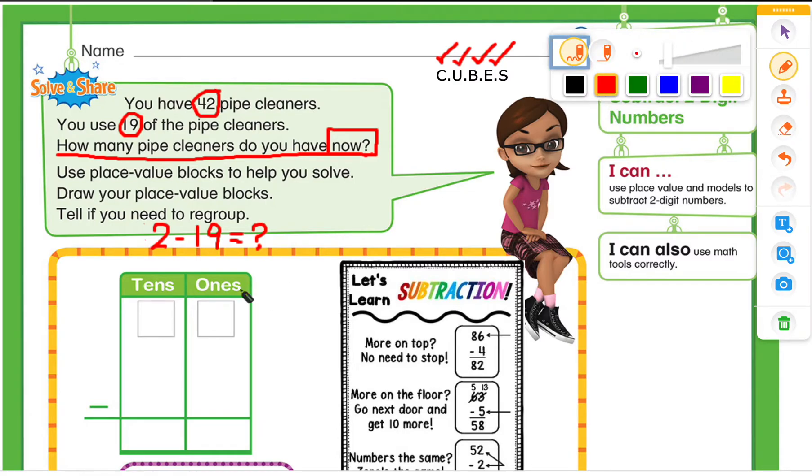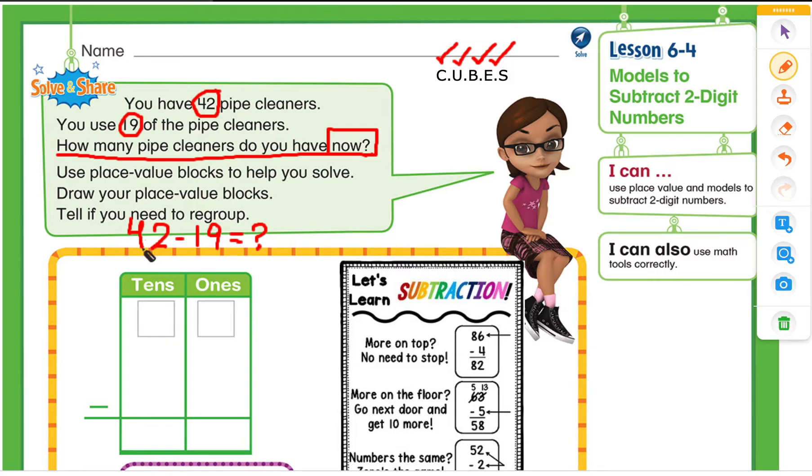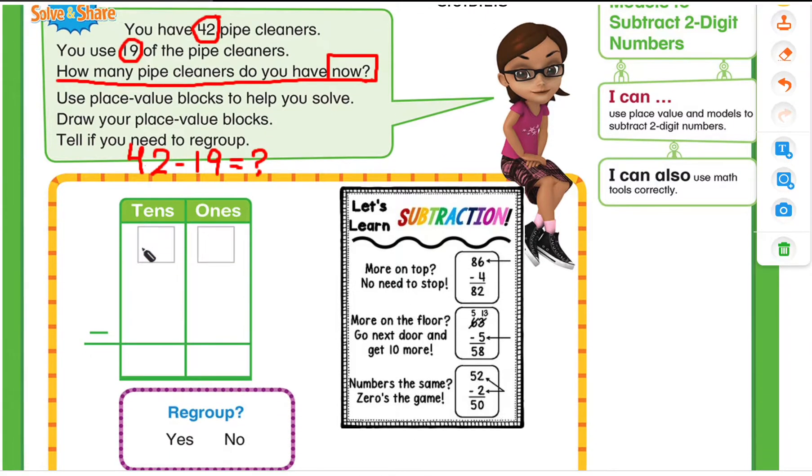And here we are going to write 42. So first, we are going to line up our numbers. So I'm going to put 42 like this. And I'm going to put 19 on the bottom. Just pay attention how I align the 1's place value numbers on one column and the 10's place value on the other column.